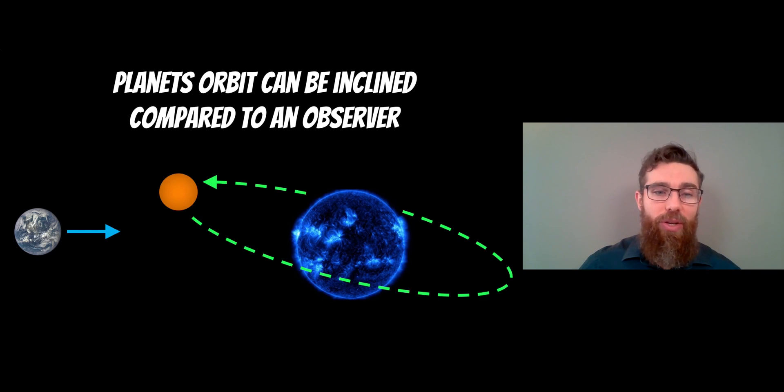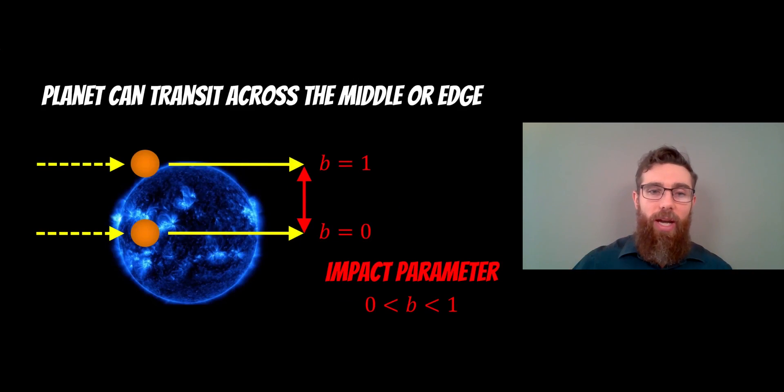Now it's got to be edge-on enough that it actually passes in front of the star as we look at it, but we don't necessarily know exactly what the inclination is. It might have some angle to it. Now as we're looking at it, that means that the planet itself can pass across any part of the star really. So it can pass across the center, the middle, or more towards the edge.